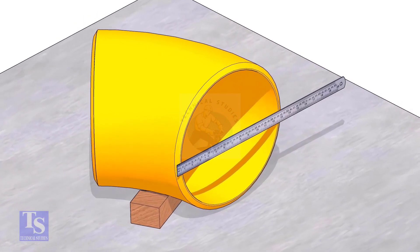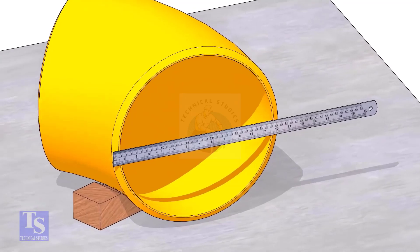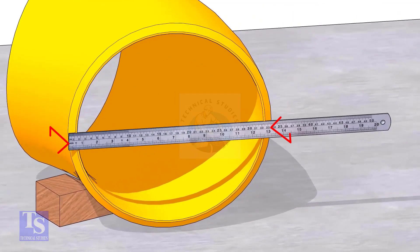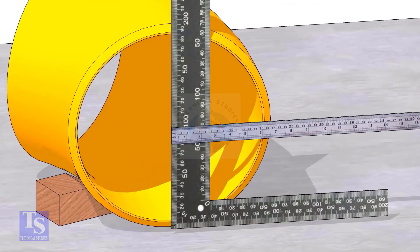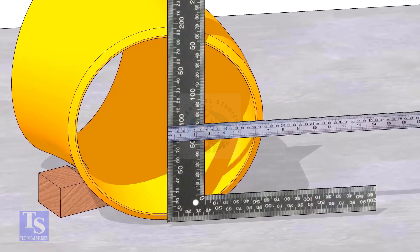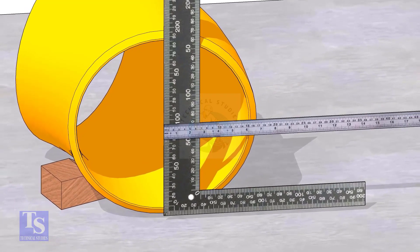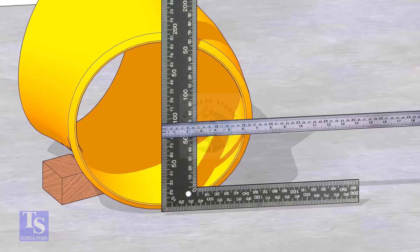Measure the outer diameter of the elbow. Put a right angle at the middle of one face of the elbow. Make sure the right angle is at the center of the elbow.